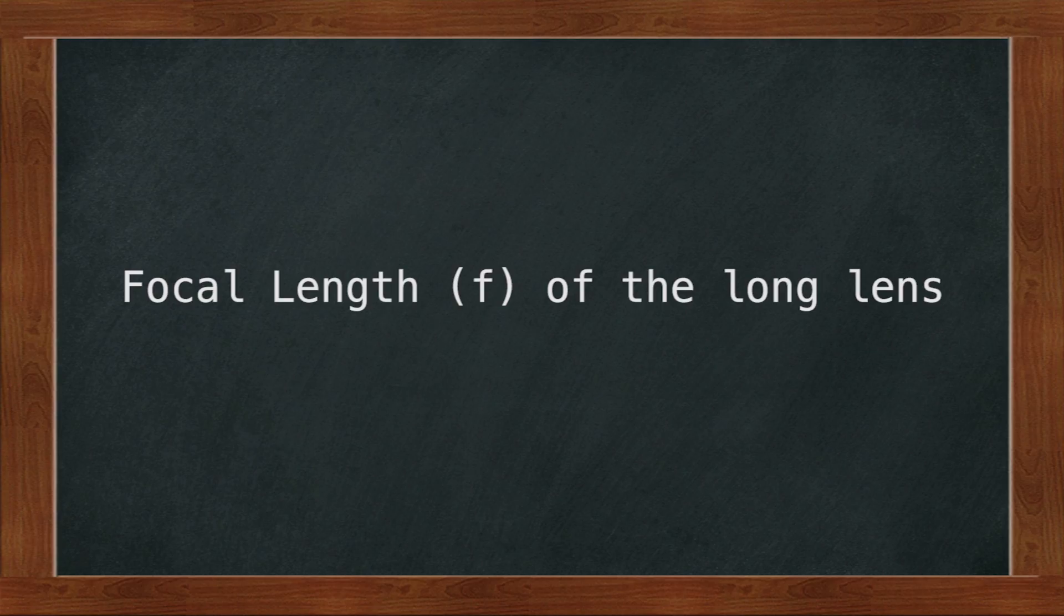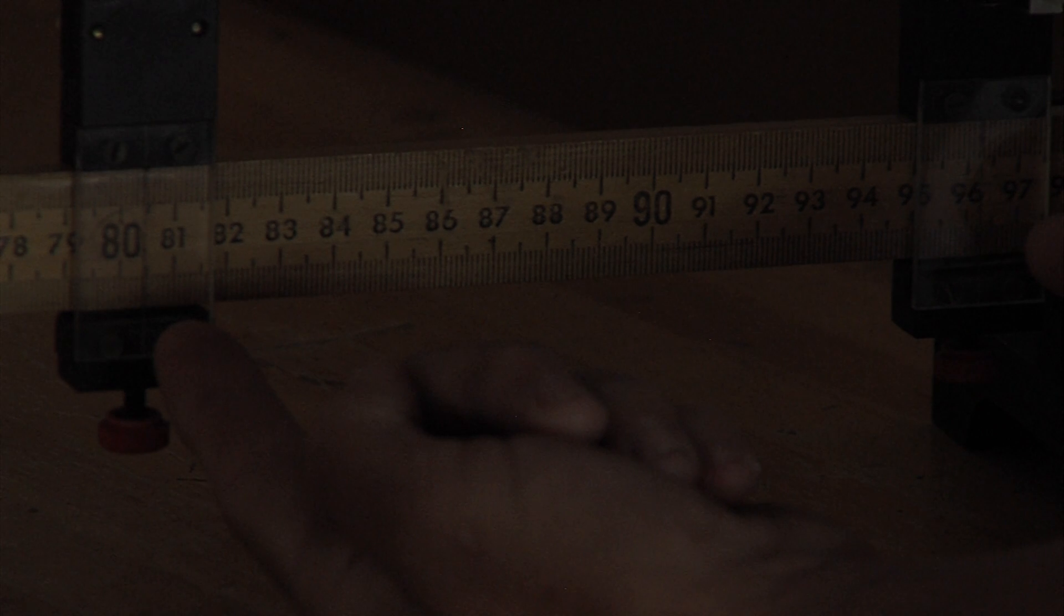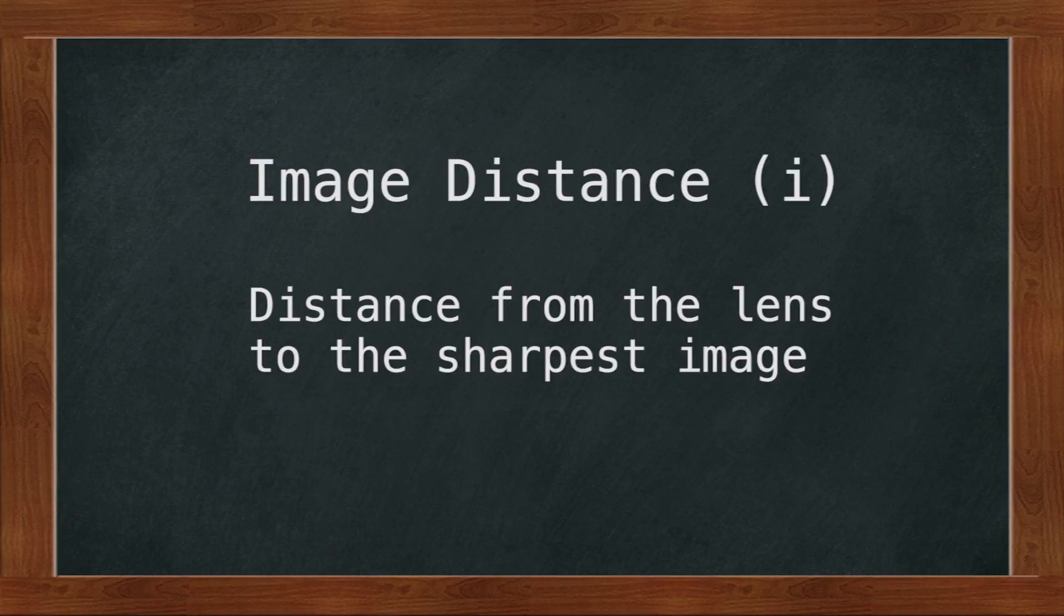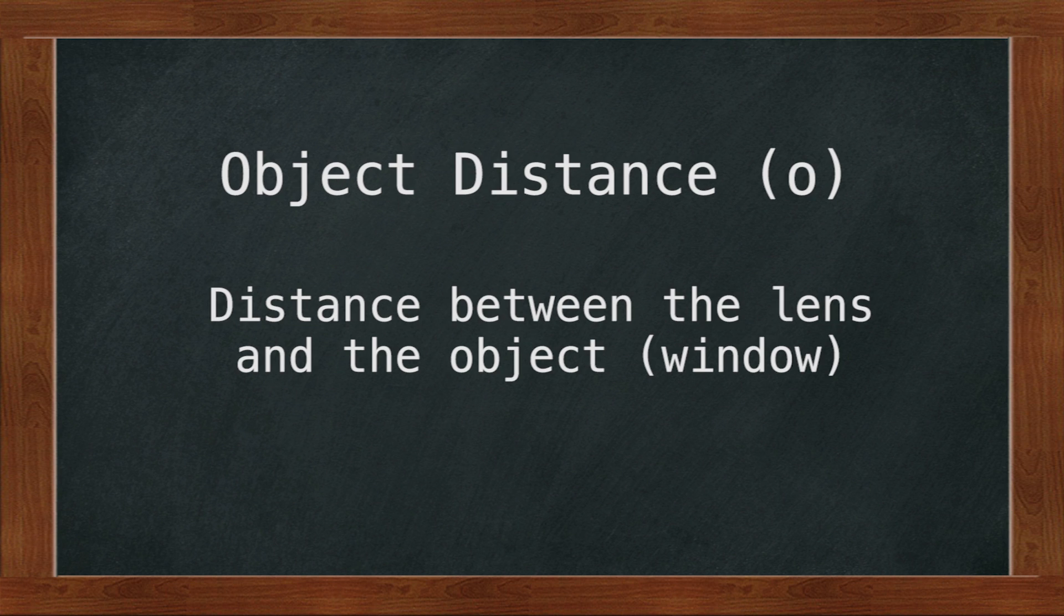To determine the focal length of the long lens, you will use the window as your object. Move the lens until you have a sharp image of the window on the screen. Measure the distance between the screen and the lens. This is the image length. The object length is the distance between the lens and the window. Inasmuch as this distance is much larger than the image distance, you will make the assumption that this is an infinite distance.